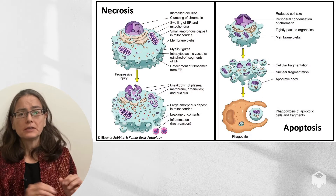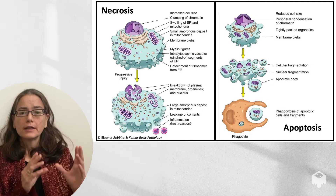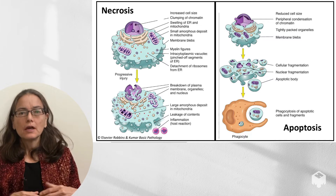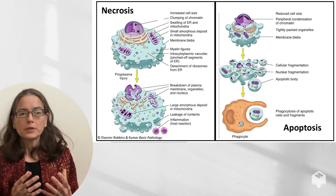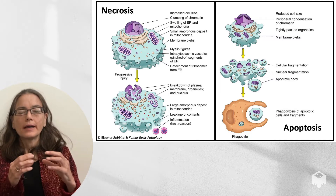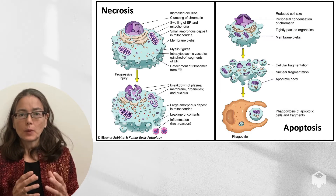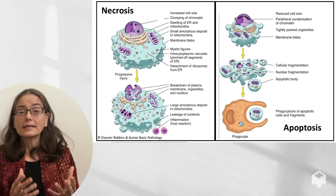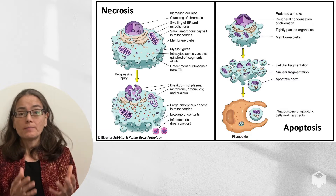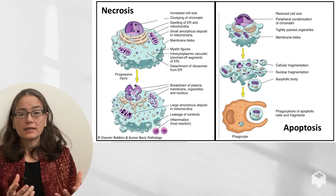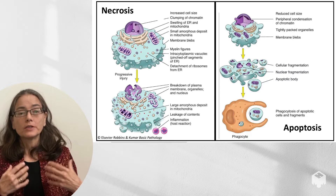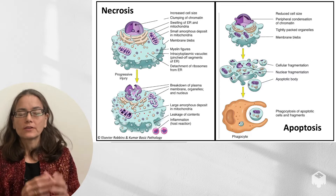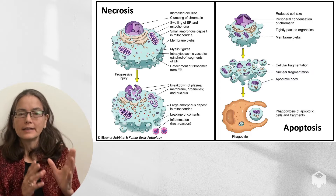So first, let's start with the serious part — necrosis and apoptosis. Necrosis is characterized by cell swelling, essentially breakdown of the membranes, leakage of the cell contents, and that's going to cause inflammation. So that's necrosis in a nutshell.